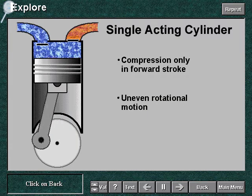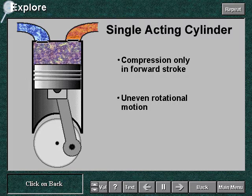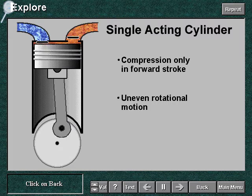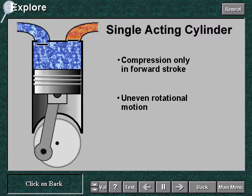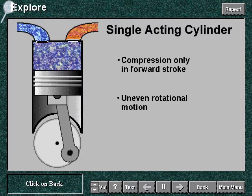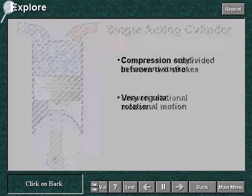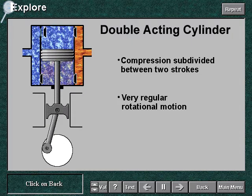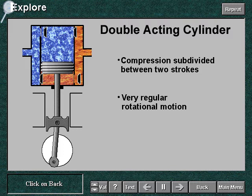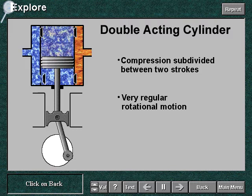Compression occurs only in the forward stroke. Subdividing the compression work between the two strokes of the crank revolution results in more regular rotational motion for double-acting cylinders.